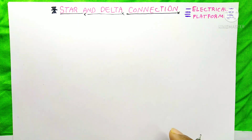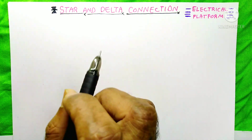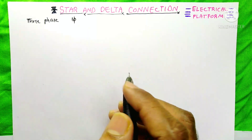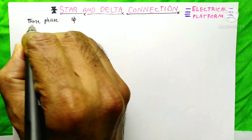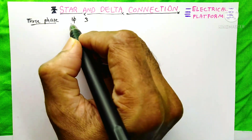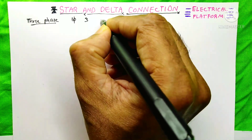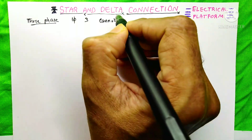Today I am going to discuss star and delta connection of motors from my electrical engineering work experience from Gulf and India. This star and delta connection are only related to three-phase motors, not single-phase motors. For these connections we need three windings. Inside the three-phase motor there are three windings, but inside the single-phase motor there are only two windings — running winding and starting winding — so we cannot connect a single-phase motor on star or delta.